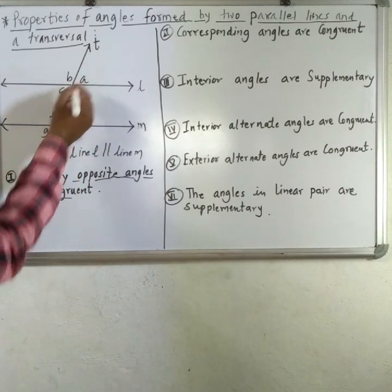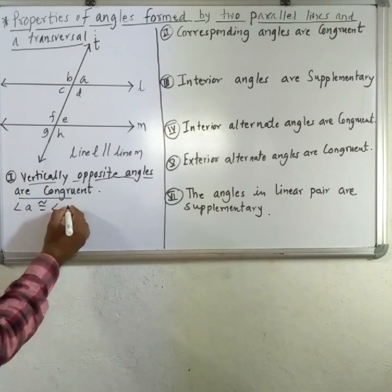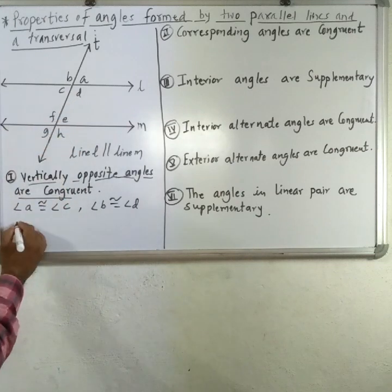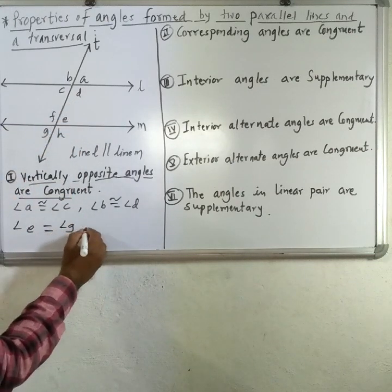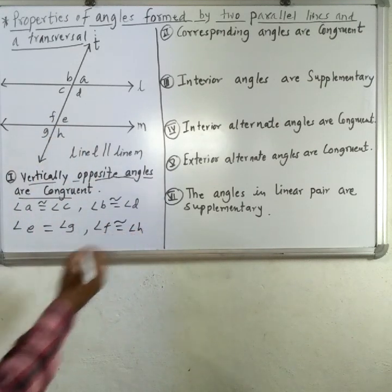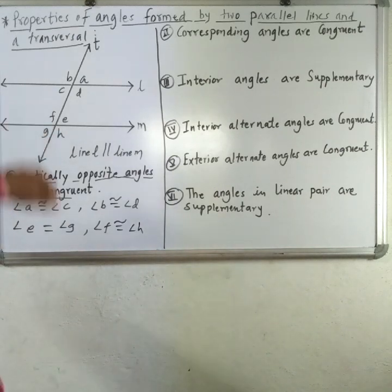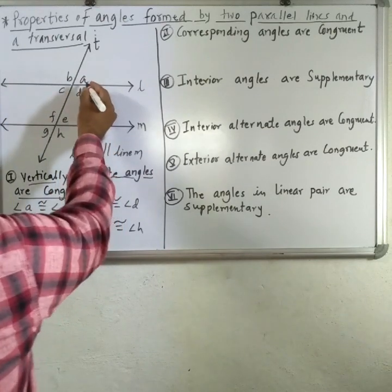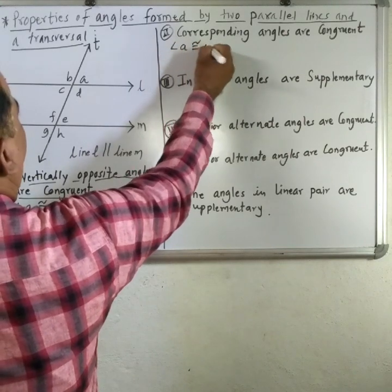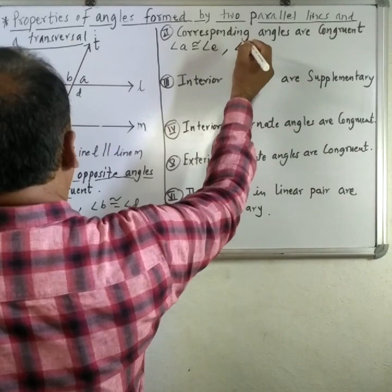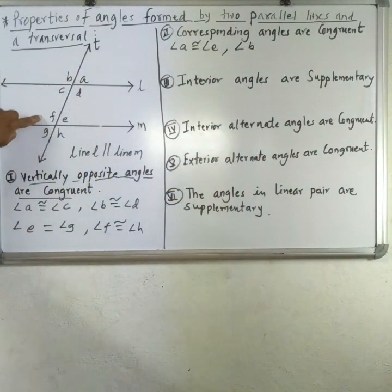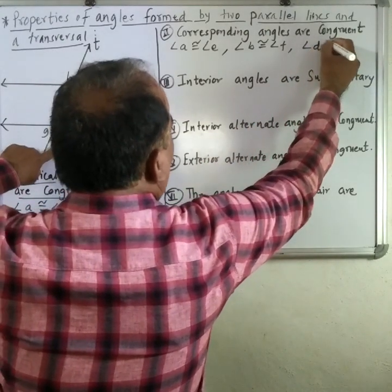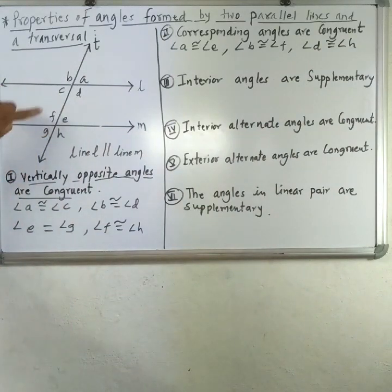The vertically opposite angle pairs are: angle A is congruent to angle C, angle B is congruent to angle D, angle E is congruent to angle G, angle F is congruent to angle H, and angle D is congruent to angle H.